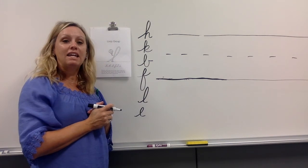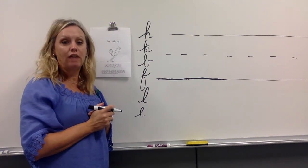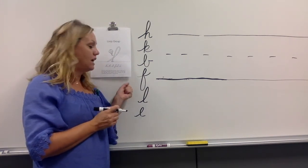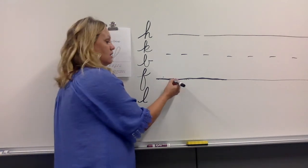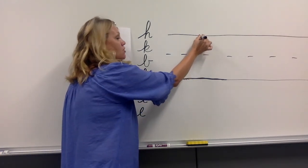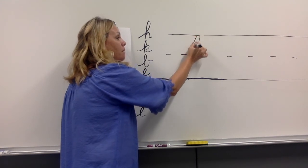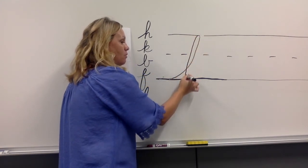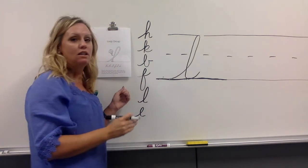Okay, we saved the easiest letters for last. Lowercase L. Start at your bottom writing line, loop, kite string up, loop back all the way at the top, pull down and release. This one's tall.